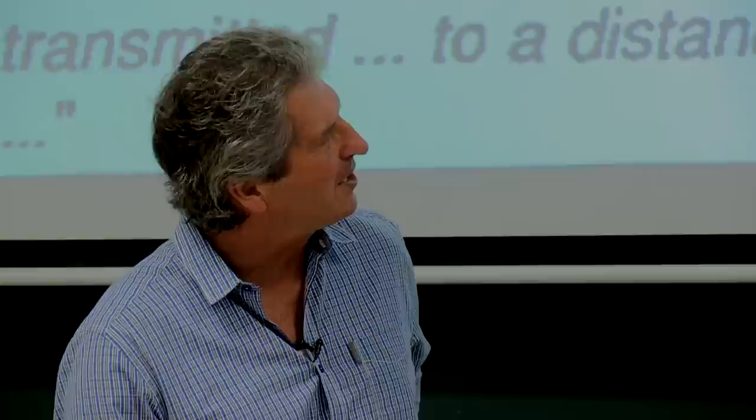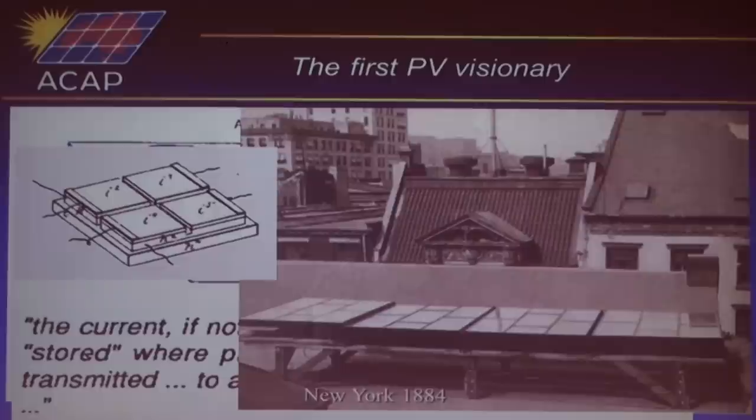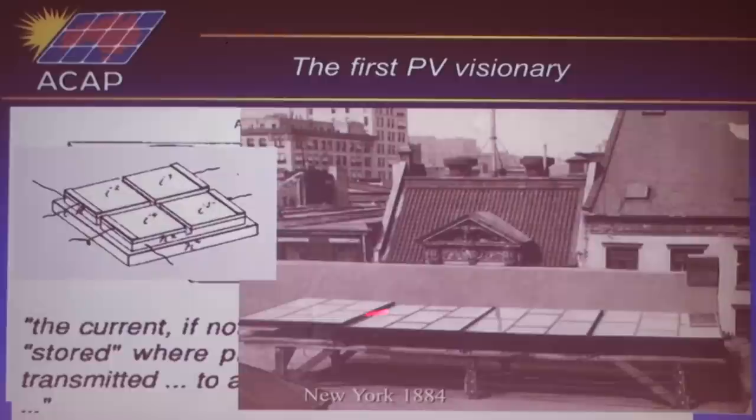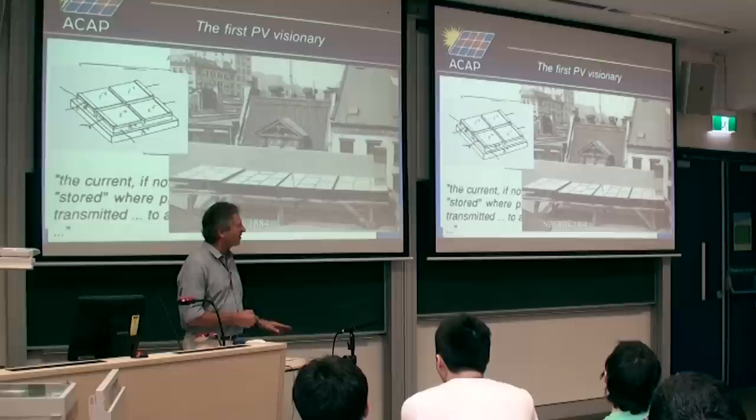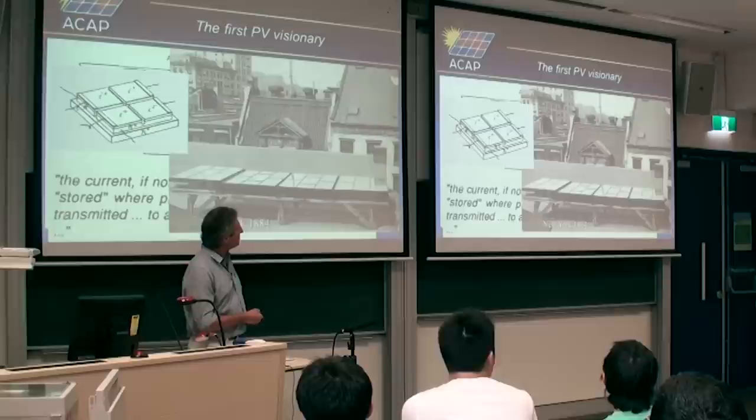This is a drawing from his patent application. Surprisingly, he actually built a working system — this is in New York in 1884, with solar panels powered by these selenium devices. So the history goes back quite a long way — 130 years of actual solid-state photovoltaics. Unfortunately, the selenium devices weren't all that efficient — a lot less than 1% — so not very practical, but still very interesting. Edgar Fritz was a real visionary in seeing where things might lead.